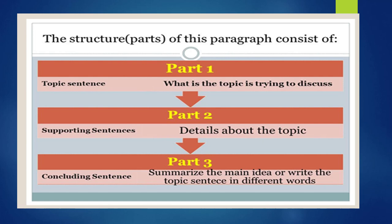Narrative paragraph: this paragraph describes an event or tells a story, usually in chronological order. For example, you can write a narrative paragraph detailing what you did on your first day of school. To look at the structure of the paragraph, the parts consist of: part 1, topic sentence — what is the topic trying to discuss; part 2, supporting sentences — details about the topic; and part 3, concluding sentence — summarize the main idea or write the topic sentence in different words.